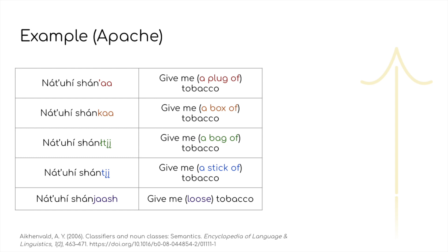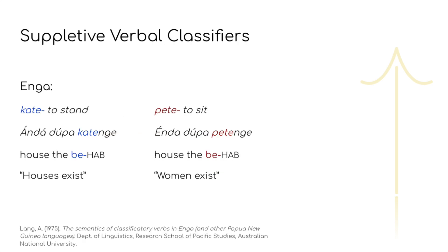There's also a subtype of these classifiers called suppletive verbal classifiers, which, as you may expect, involve suppletion. An example of this can be seen in the suppletive existential verbal classifiers in Enga, where a different copula or copula-like verb is used for different nouns. Here, 'katenge,' meaning 'stand,' is used for men, trees, houses, or other referents perceived by the speakers to be large and strong, but 'petenge,' meaning 'sit,' is used for women, possums, pawns, or other nouns perceived to be short or weak.